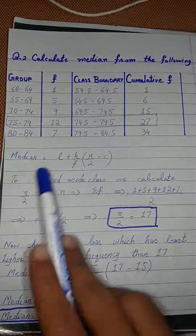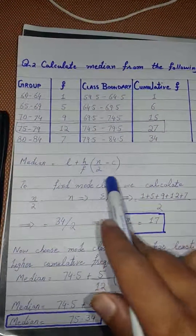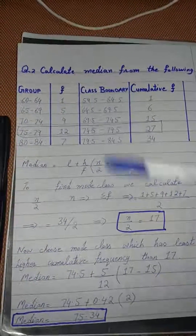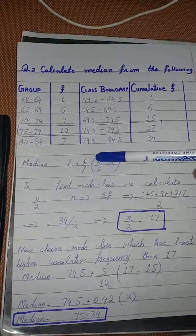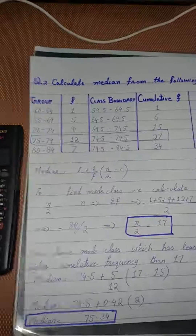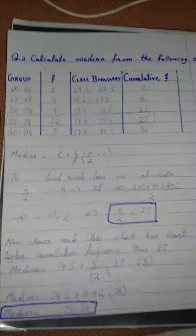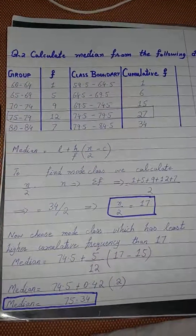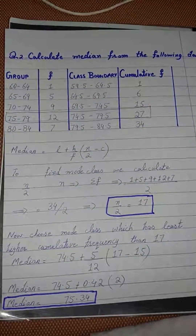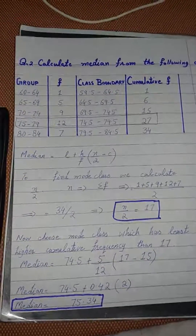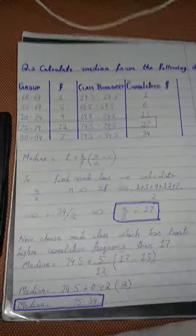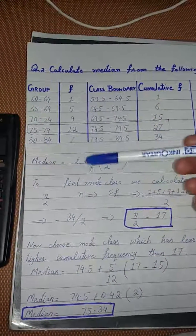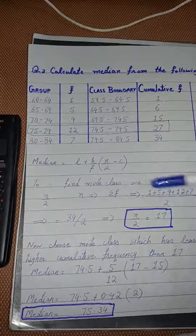Formula for grouped median is: Median = l + (h/f) × (n/2 − c). یہاں n، summation of f کے equal ہے — یعنی تمام frequencies کا مجموعہ۔ Model class select کرنے کے لیے سب سے پہلے n divided by 2 calculate کریں۔ 34 divided by 2 equals 17 — تو n/2 = 17۔